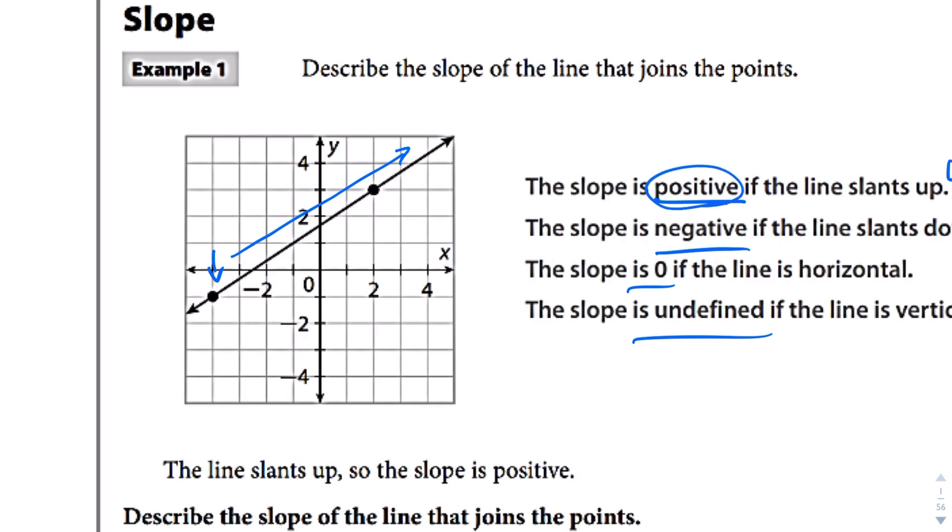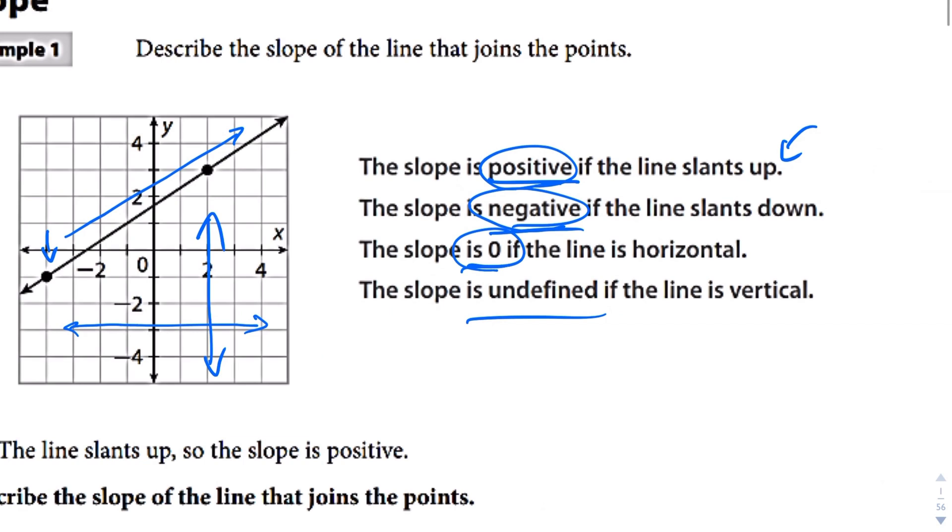And if it starts sloping downwards, we're going to say it's negative. If it's horizontal, so meaning if it's just not going up or down, it's just horizontal, then we have a slope of zero. And then an undefined slope is when we have a line that's just going straight up and down, so when the line is vertical.